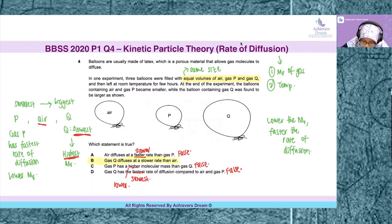Why is it B? Gas Q diffuses at a slower rate than air. This is true. The balloon containing air is smaller than the balloon containing gas Q. Hence, gas Q has a slower rate of diffusion. The answer is B.